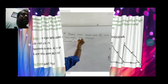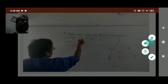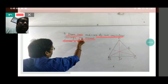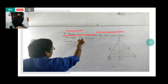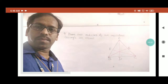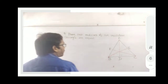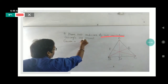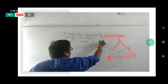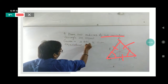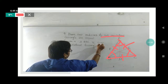The question is: prove that the medians of an equilateral triangle are equal. We have to prove this. Here is that question. In an equilateral triangle, all three sides are equal and all three angles are also equal. This is the property of the equilateral triangle.